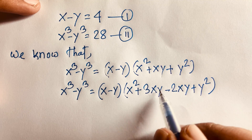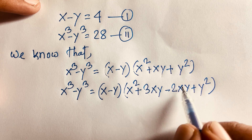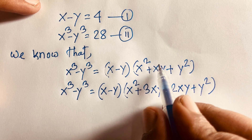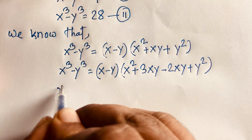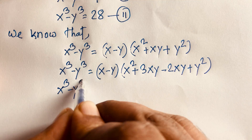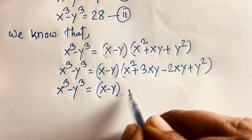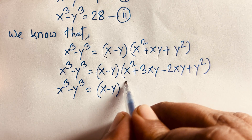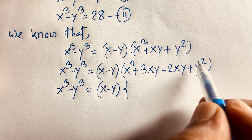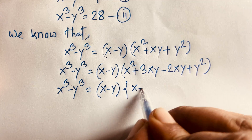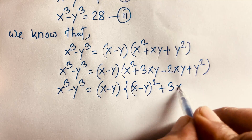Now, 3xy minus 2xy gives us xy. Because 3xy is positive and 2xy is negative, so the result is positive. Therefore, x cubed minus y cubed equals x minus y, times the quantity x squared minus 2xy plus y squared plus 3xy. And x squared minus 2xy plus y squared is simply x minus y, whole squared, plus 3xy.